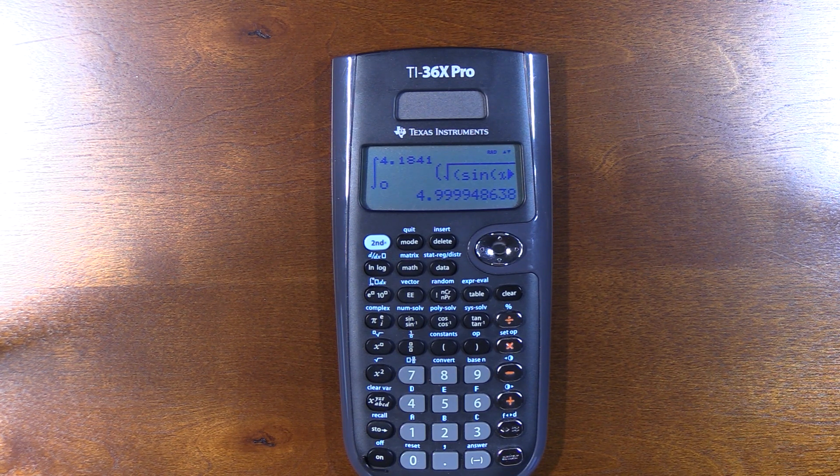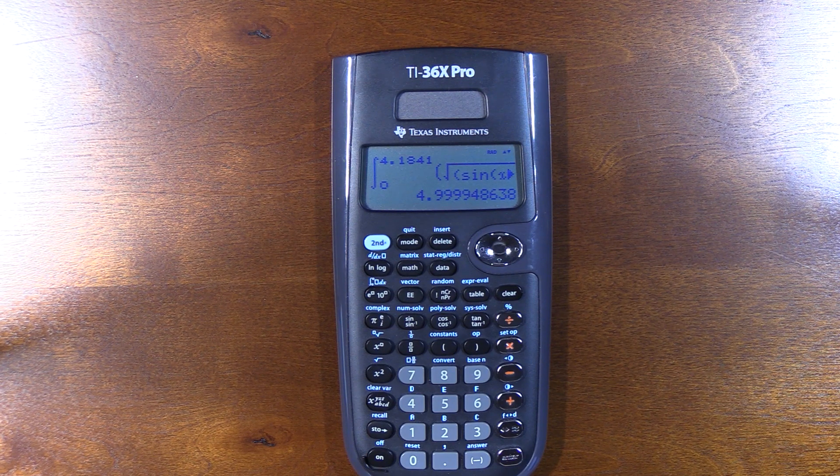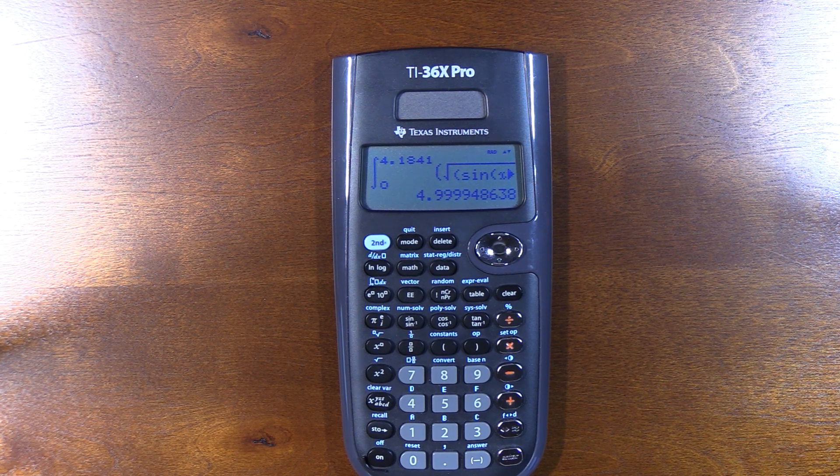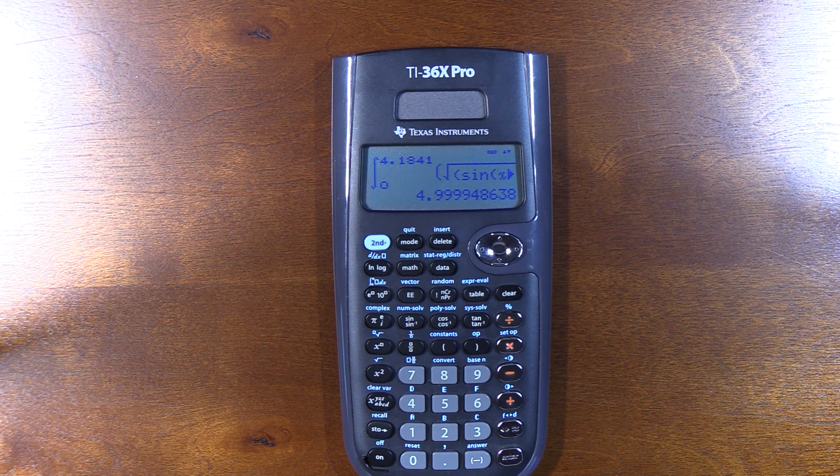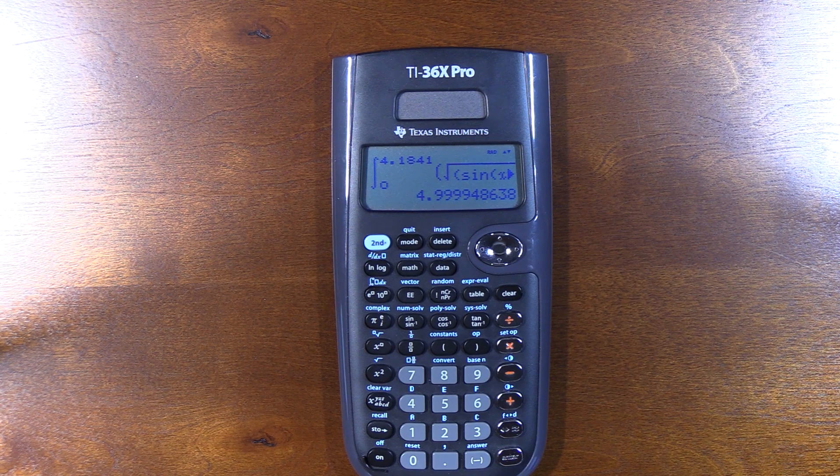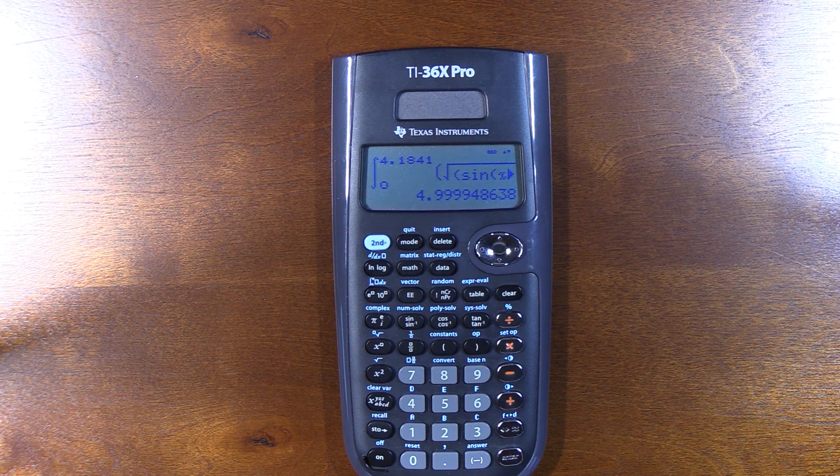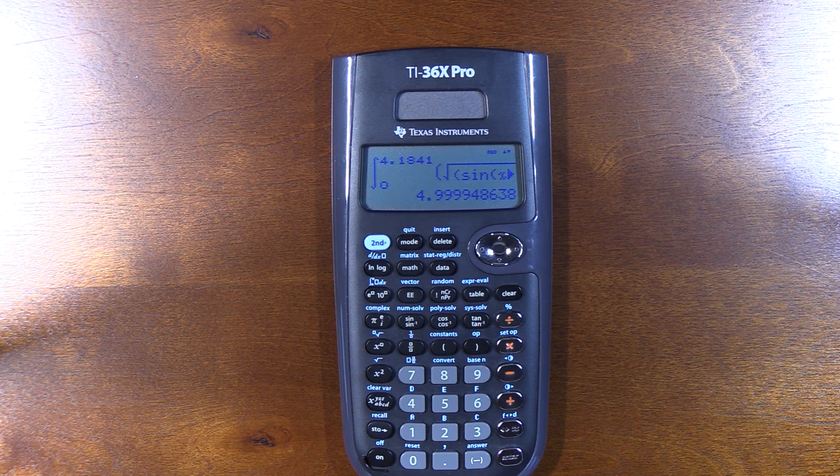All right, so there's our answer. The definite integral from 0 to 4.1841 gets us really, really close to 5. So the area under the curve equals 5 when you give it that upper bound. That's really cool that this calculator can do that.